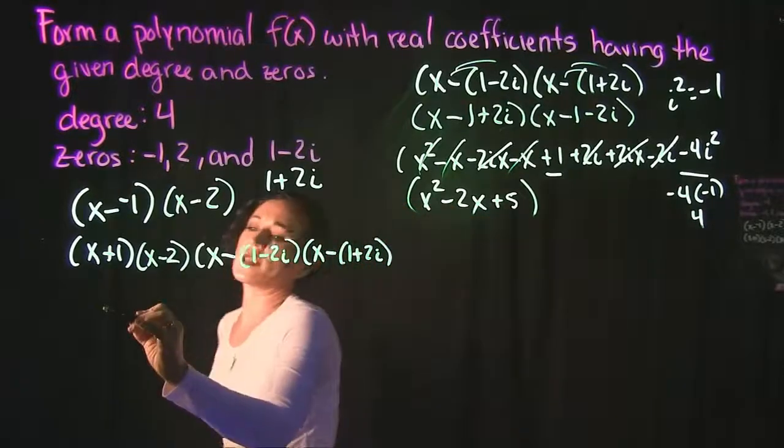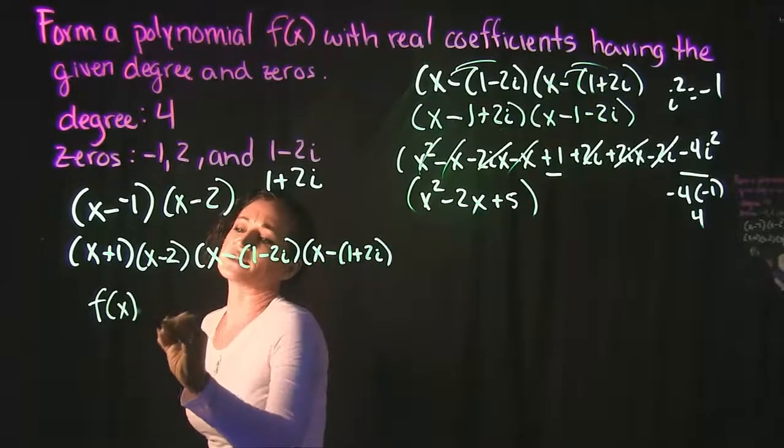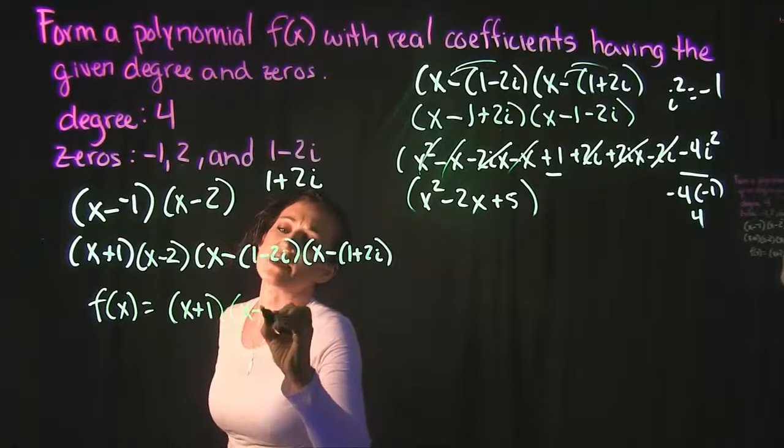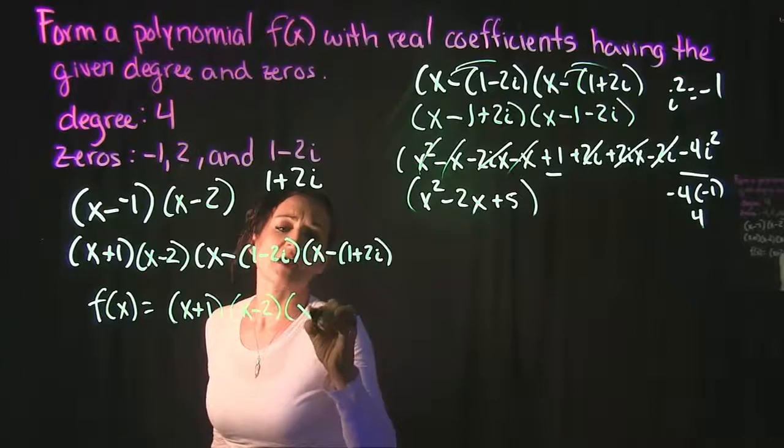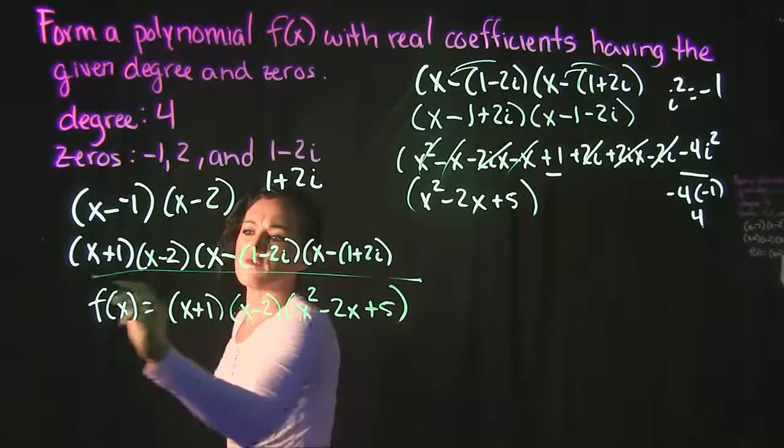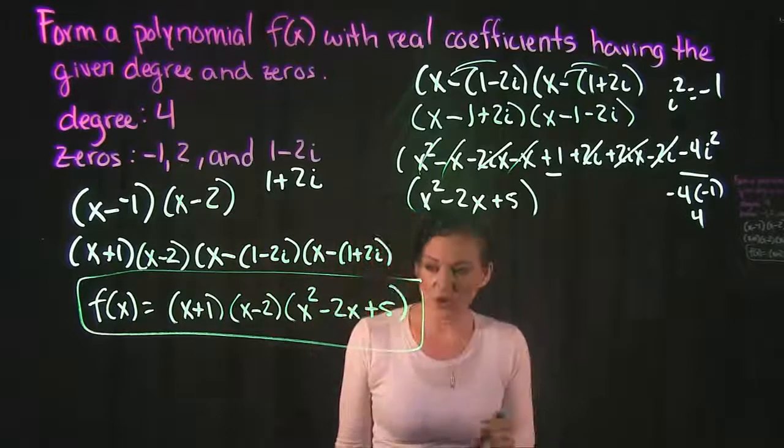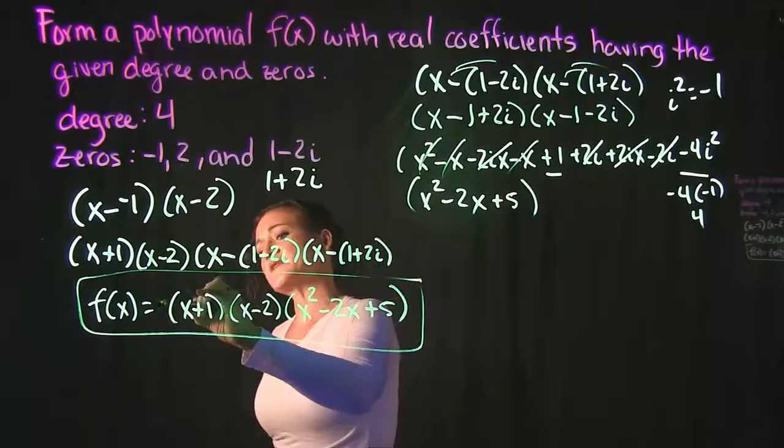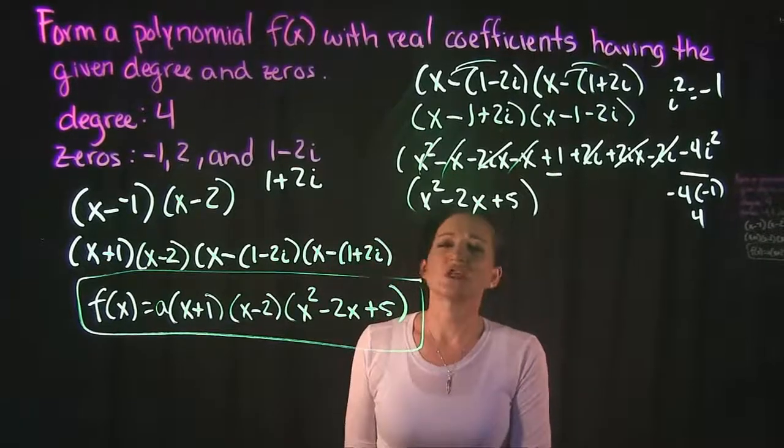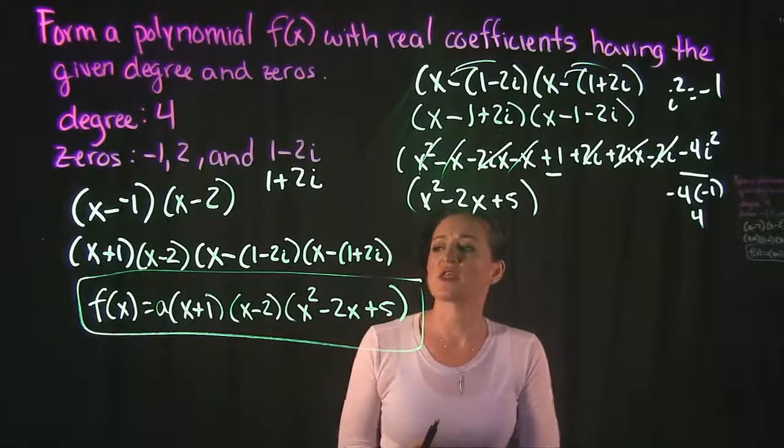This is what our polynomial is going to look like. It's going to look like f(x) is equal to x plus 1 times x minus 2 times x squared minus 2x plus 5. This should be our polynomial right here. Sometimes they include the a here in the front. That's part of the formula for this particular problem. We're not solving that. It's just part of the formula and it could be there.